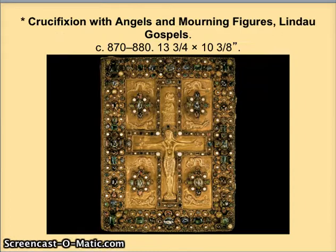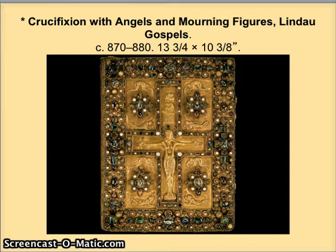If you're going to have magnificently illustrated books, you better have a good cover. This one is a spectacular cover created in the year 870 to 880. It was taken from its original book and put on another book in about the 9th century. It's made primarily of gold but also has pearls, garnets, sapphires, and emeralds included. This is a spectacular example of Carolingian metalwork.